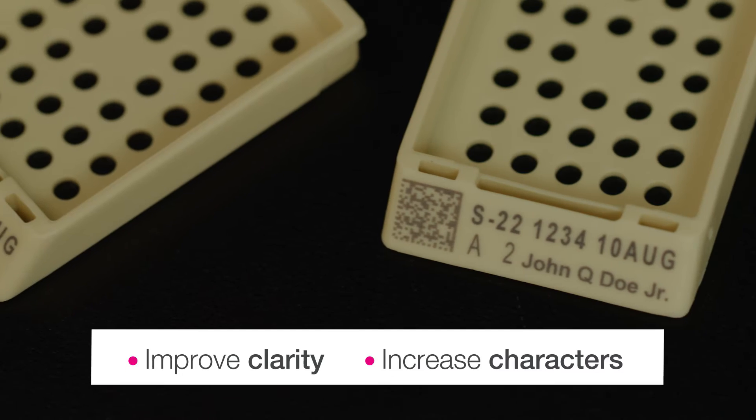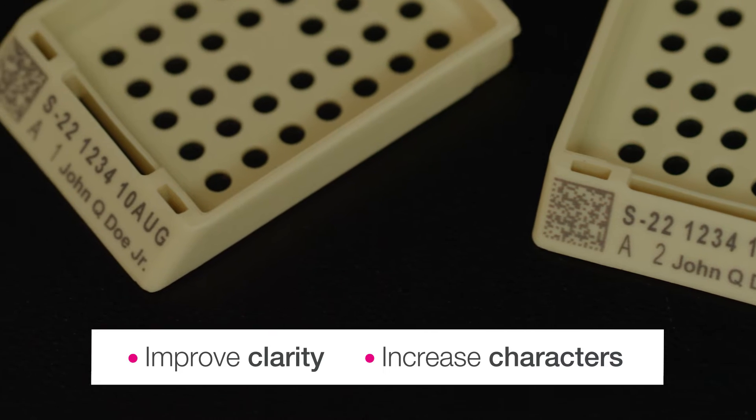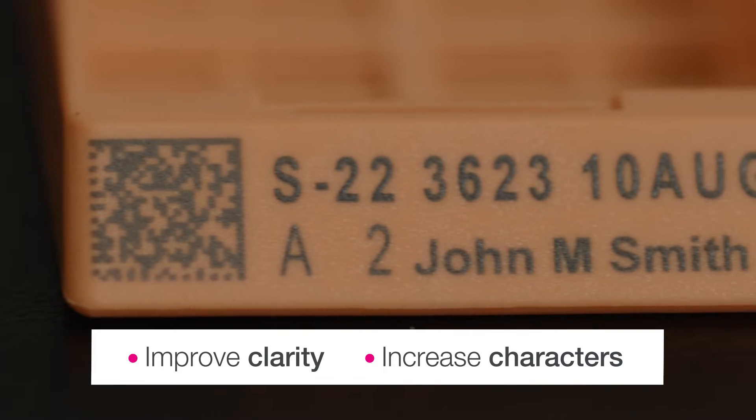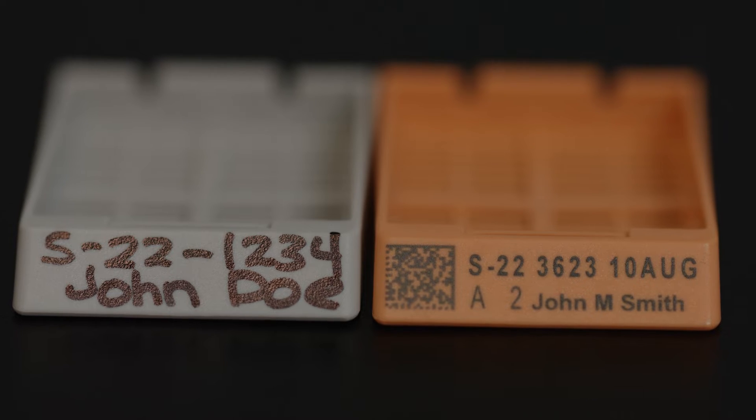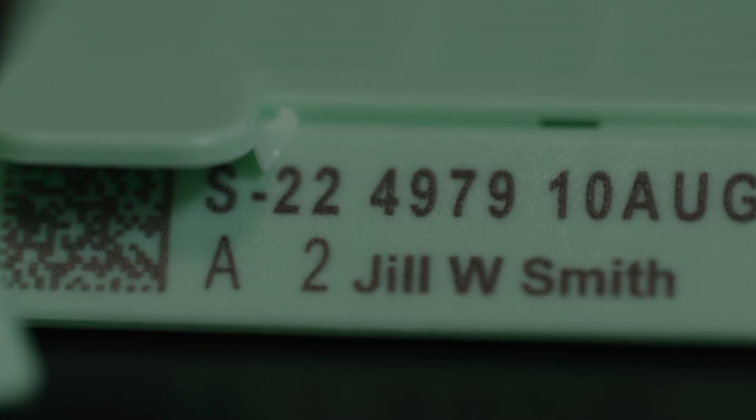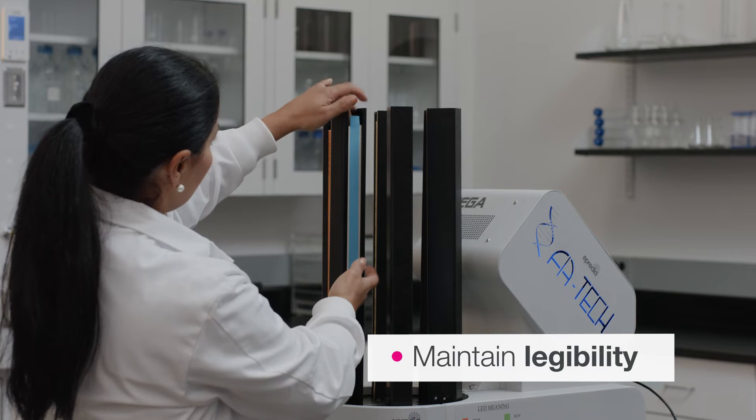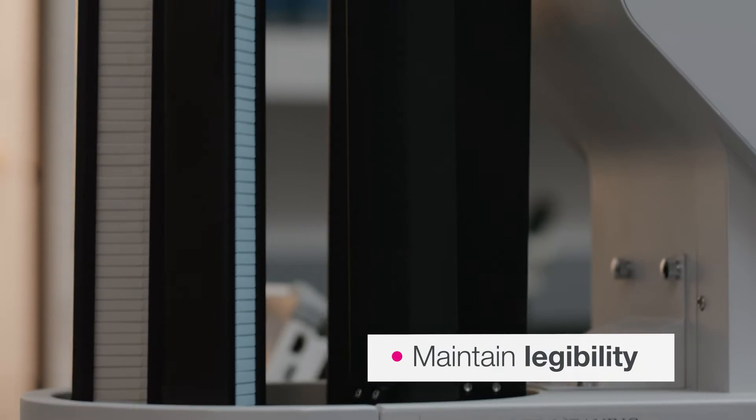Its 600 dpi printing improves the sharpness and clarity of characters, allowing more characters to be embedded and maintaining legibility, from grossing through archiving. Specialty cassettes help ensure permanent and indelible marking for high durability over time.